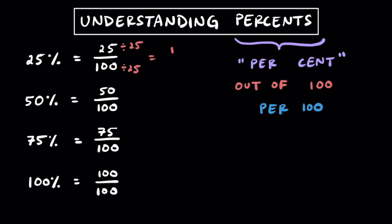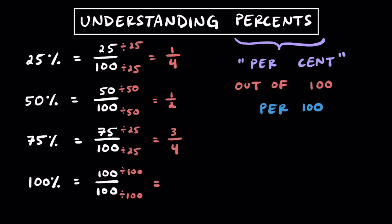For 25 over 100, we can divide them both by 25 and get a simplified ratio of 1 to 4. For 50 to 100, we can divide them both by 50 to get a ratio of 1 to 2. For 75 to 100, we can divide them both by 25 to get a simplified ratio of 3 to 4. And for 100 to 100, we get a ratio of 1 to 1, or just one whole.